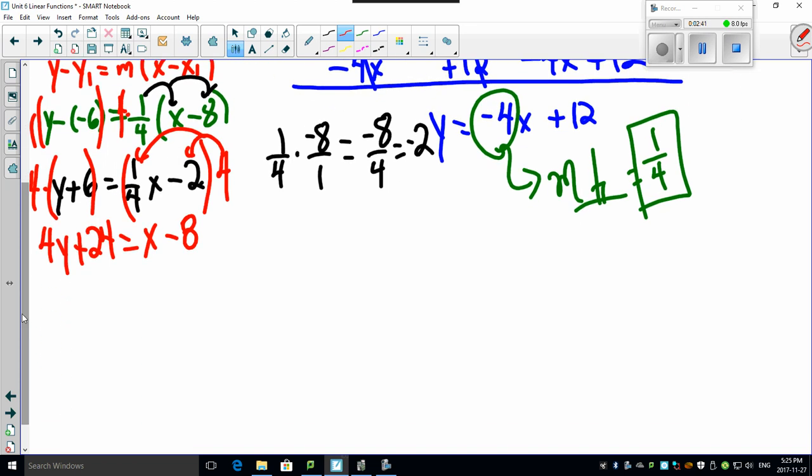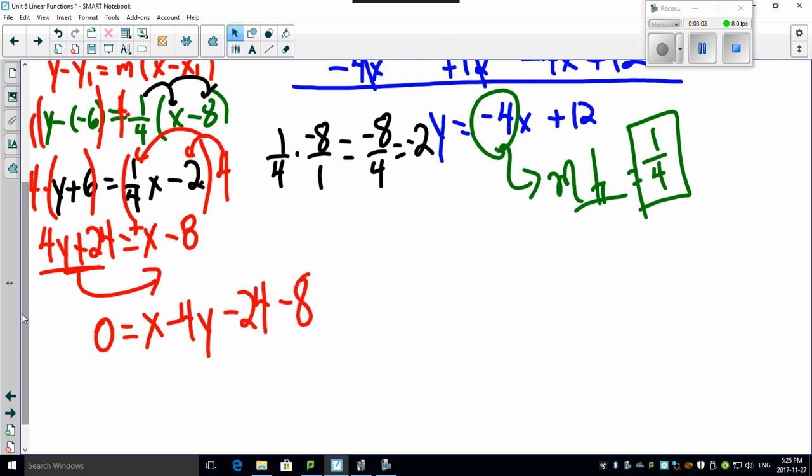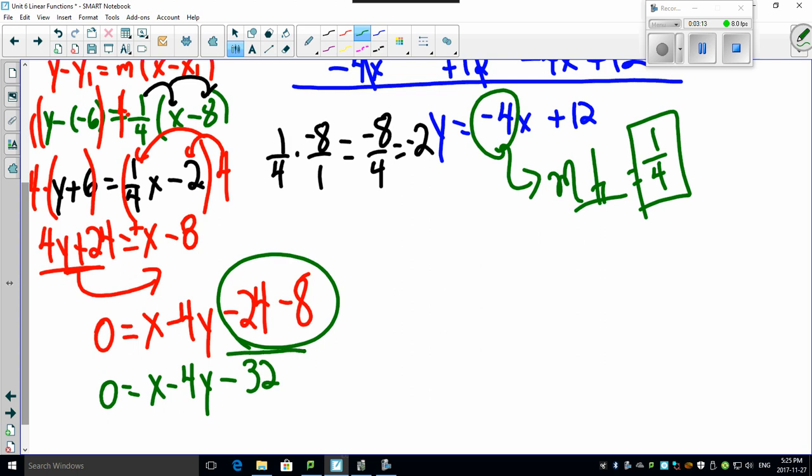All right. Bring everything from this side over to this side. Why? Because the x is already positive on this side. So I don't have to flip the sign again. Remember, your x's have to be whole numbers and positive. So this will give you 0 equals x. Bringing the 4 over, subtract 4y. Bringing the 24 over, subtract the 24. And look, I've got an 8 there. Clean it up. Combine some like terms. There it is. 0 equals x minus 4y minus 32. And there is your formula. Woo!